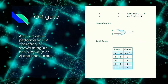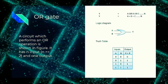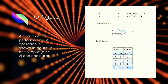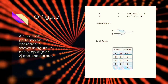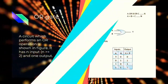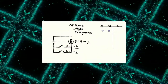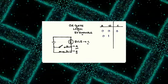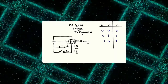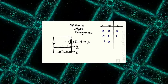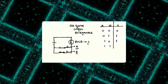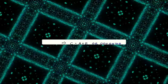OR gate: A circuit which performs an OR operation has n=2 inputs and one output. When both S1 and S2 are open (A and B are zero), the bulb does not glow and C is zero. But once S1 or S2 or both become one (closed), the bulb glows and C becomes one. From the truth table, C equals A plus B (A OR B).